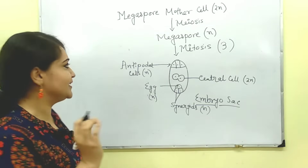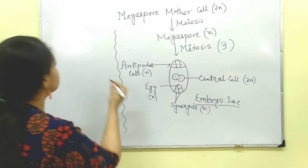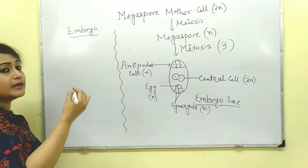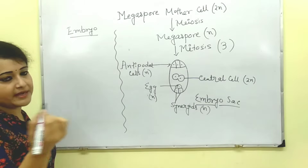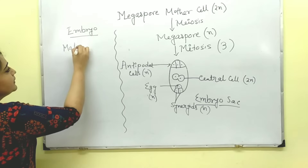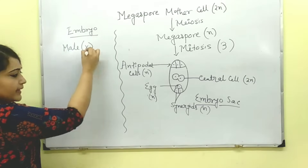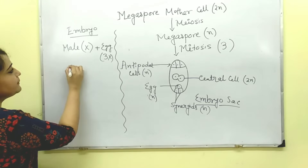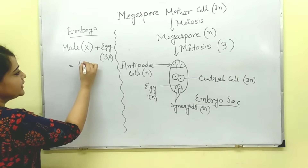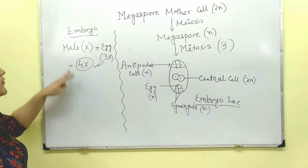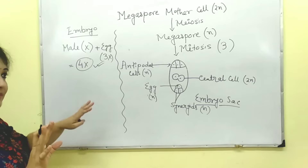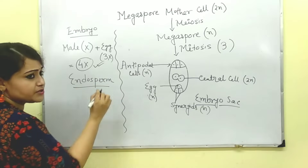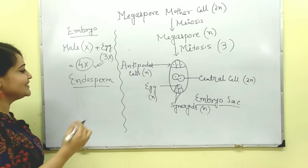Now let us come back to the question. What is asked? The ploidy level of the embryo. How is an embryo formed? By fusion of male and female gametes. In the question, male gamete is X and female gamete, that is egg, is 3X. So the ploidy level of the embryo is simply X plus 3X, which gives us 4X. So 4X is the ploidy level of the embryo.